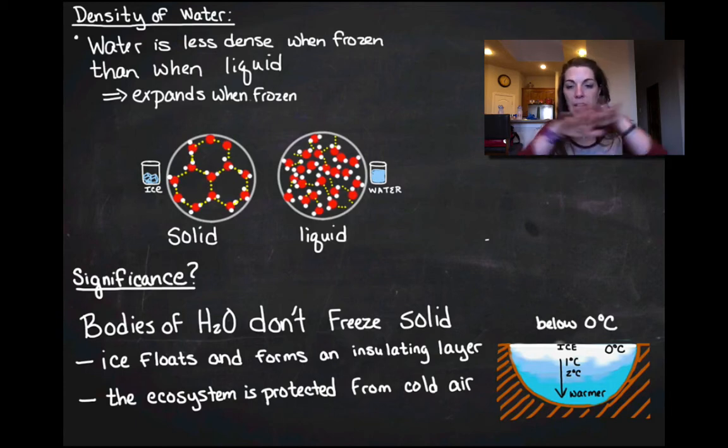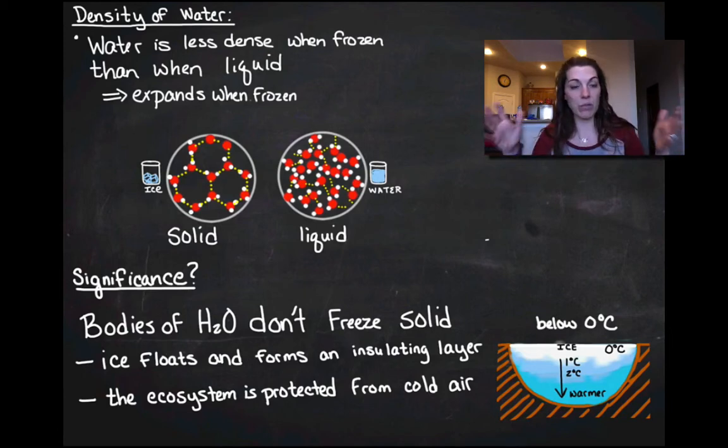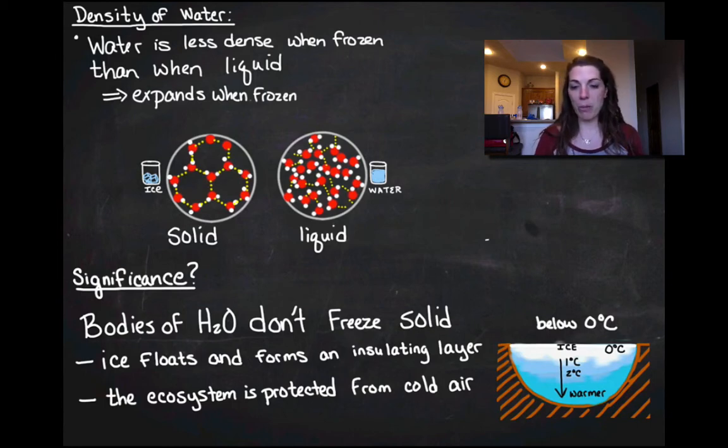So the ice layer is kind of going to act like the lid of a cooler. It's going to keep that air that's really cold from affecting those deeper waters. And what we do is we form a gradient, a heat gradient, and that's called a thermocline. So I'm going to have my thermocline going from zero degrees to well above freezing.